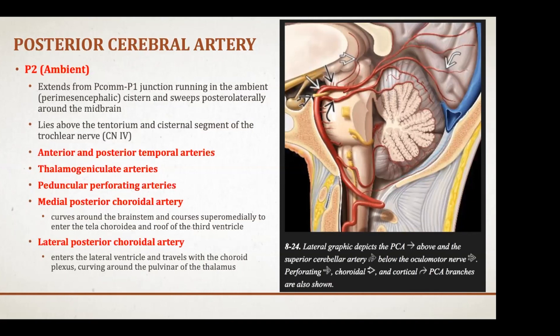The P2 segment has many important branches: the anterior and posterior temporal arteries, the thalamogeniculate arteries, the peduncular perforating arteries, and two branches that become important in AVM surgery — the medial posterior choroidal artery and the lateral posterior choroidal artery. These vessels can supply AVMs and it's important to know what they supply and what happens if you sacrifice them.